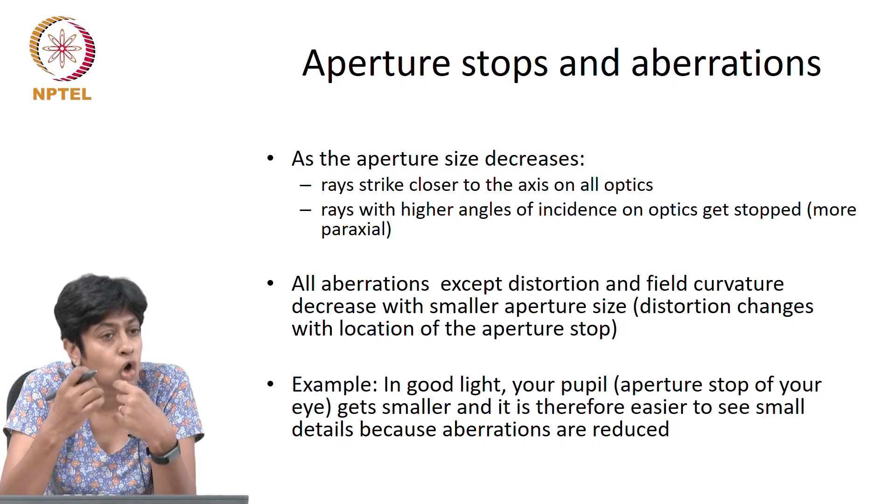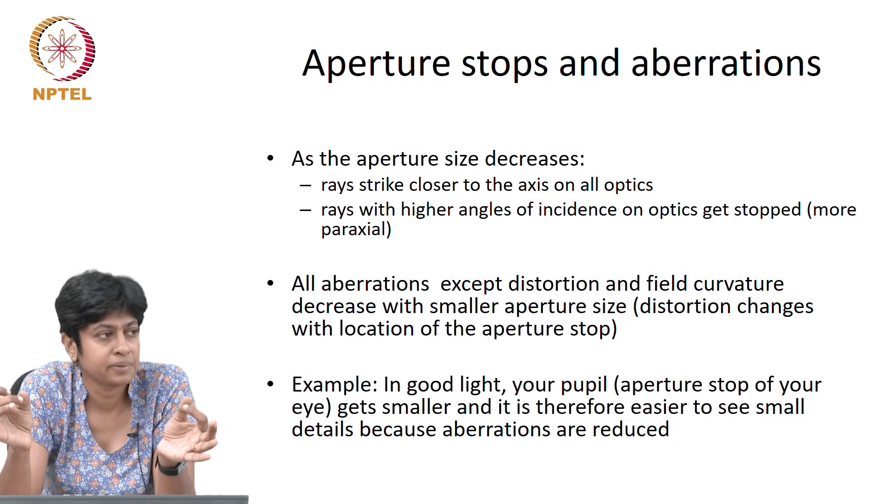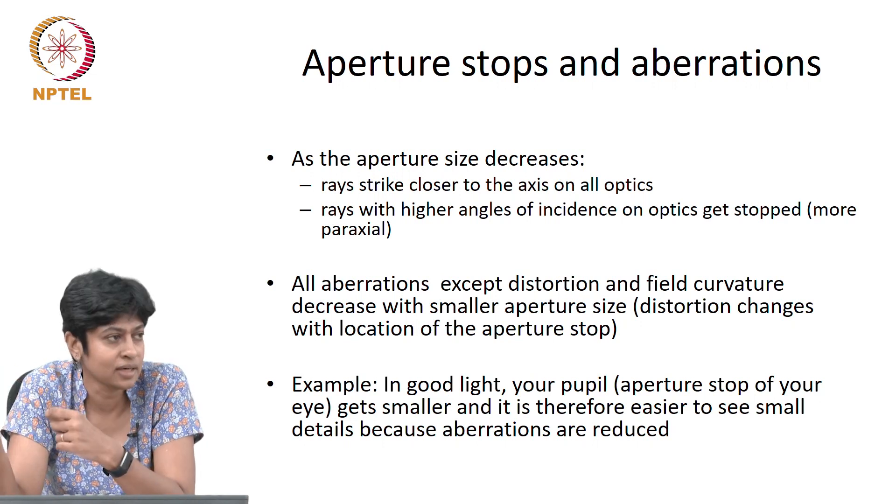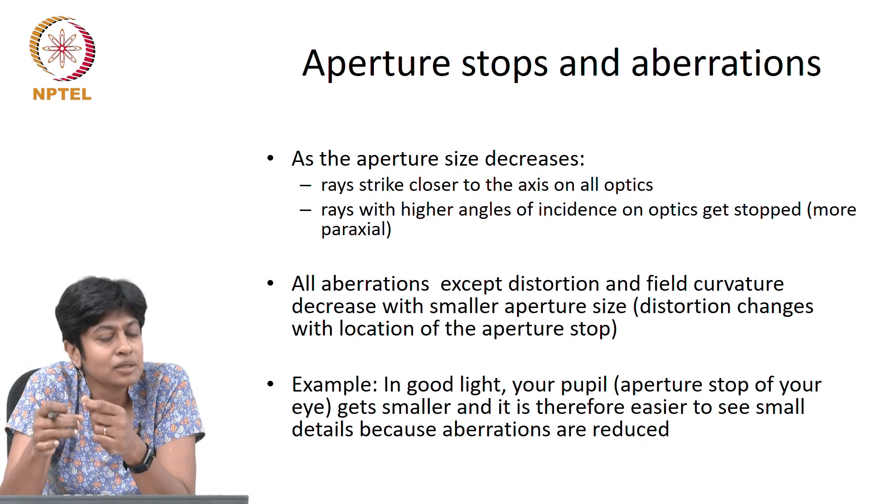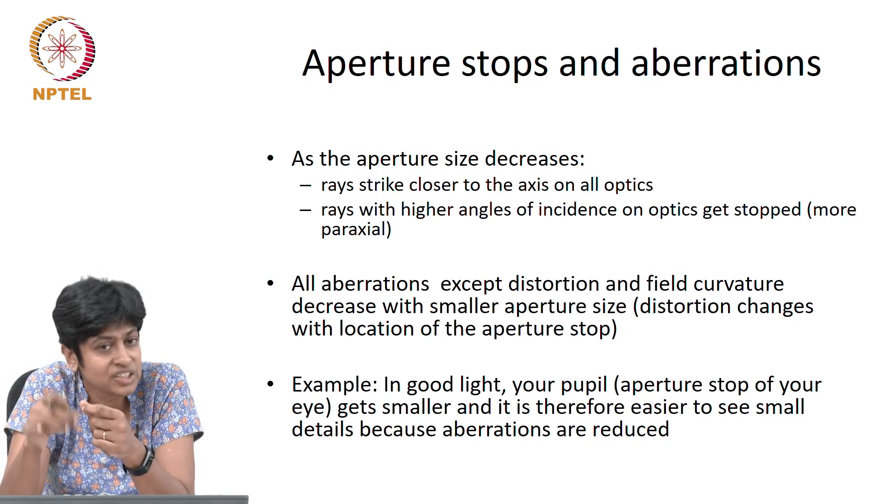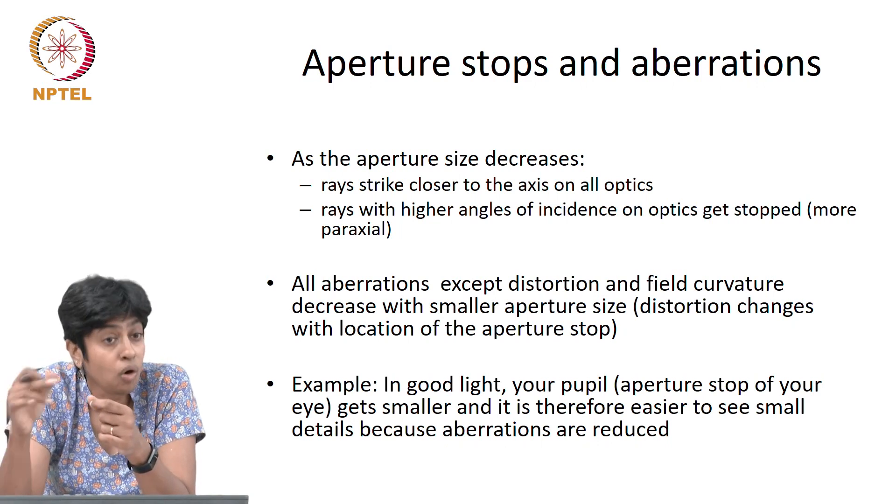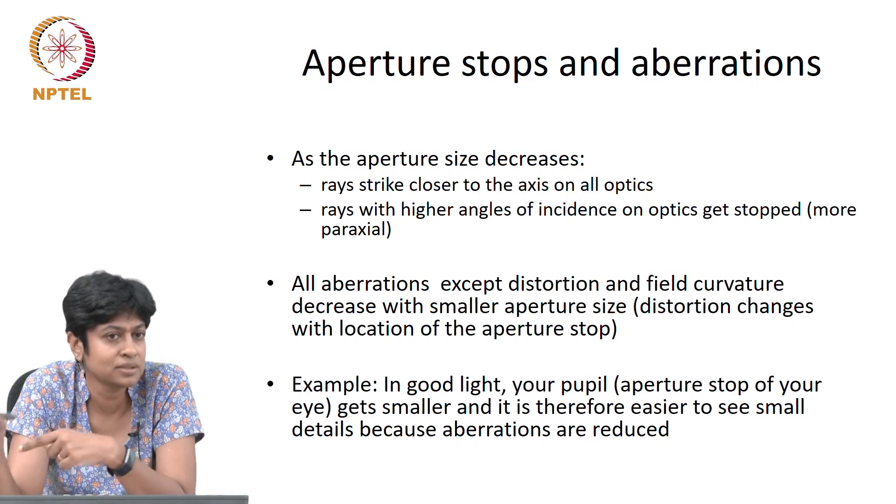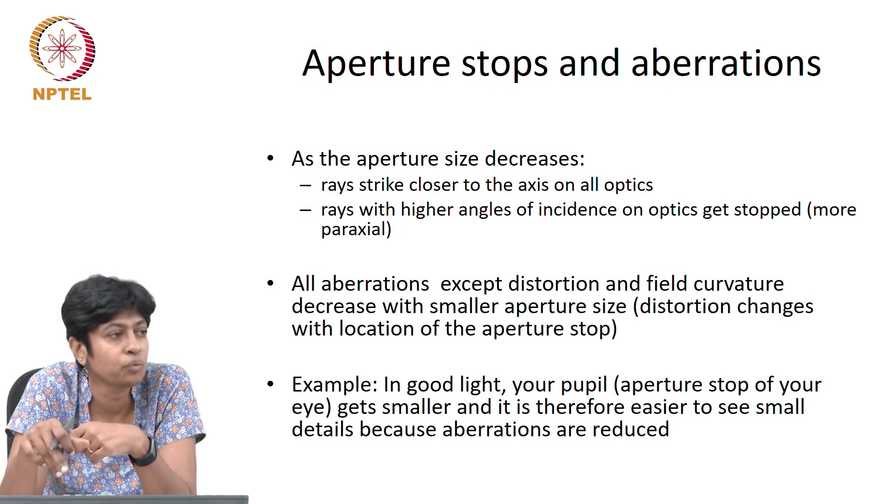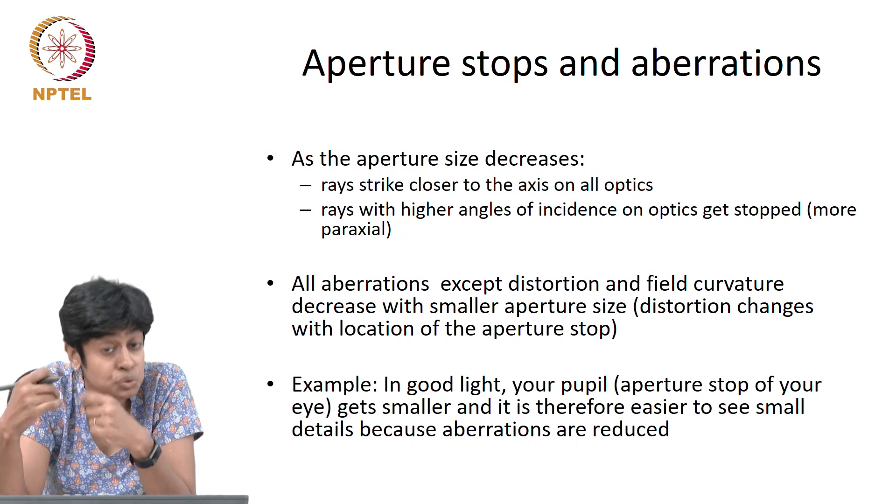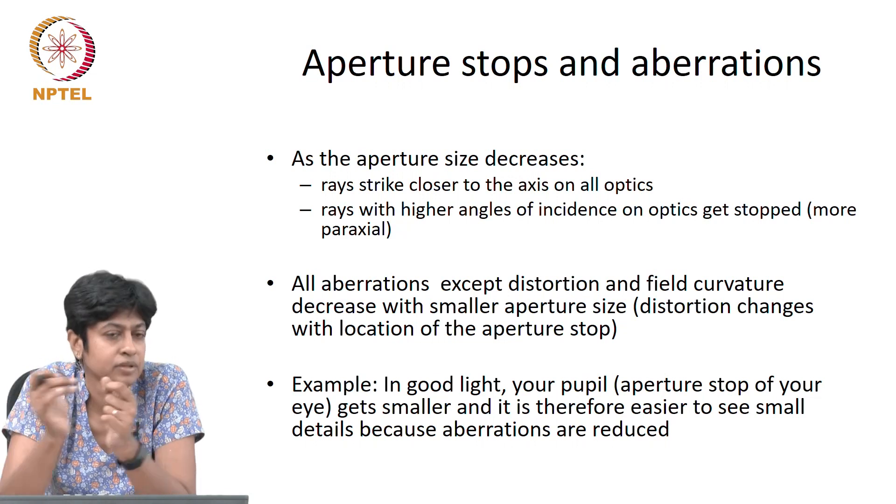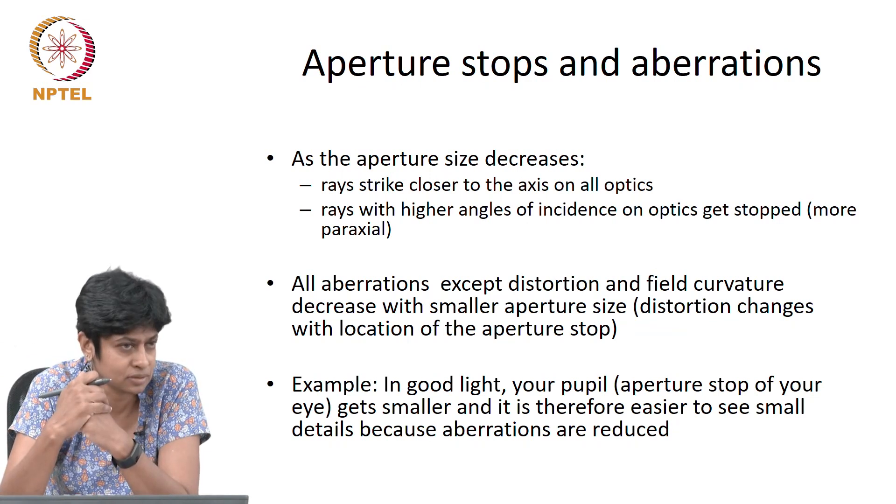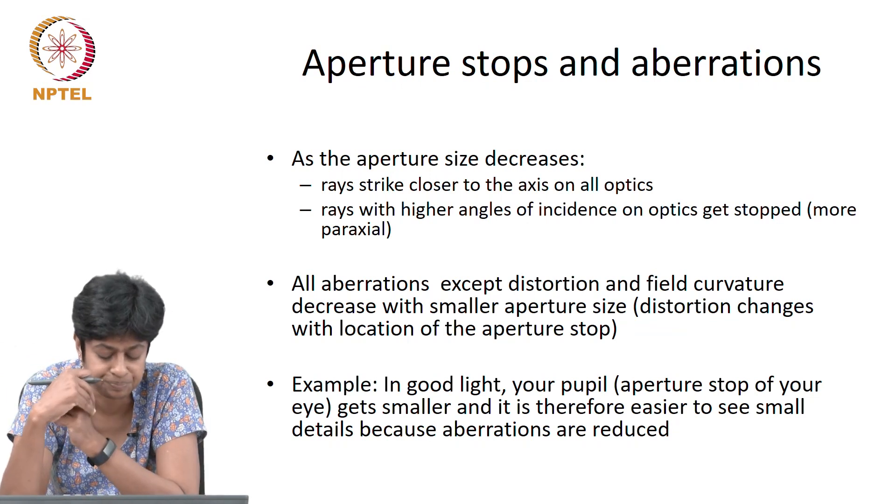But one common cause, not for all the aberrations but for some of the aberrations, is to do with the cone of light coming into the system. Thereby, moving the aperture stop, changing its position or changing its size, will control which rays make it through the system and therefore will control the aberrations. It becomes a tool by which to control the aberrations of the system or design a system with better aberrations, less aberrations, I should say.